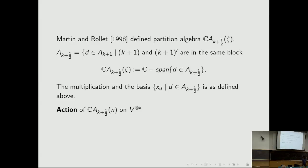Martin and Rollet in 1998 defined the partition algebra CA_{K+1/2}(ζ). Here A_{K+1/2} is the set of all elements in A_{K+1} such that K+1 and (K+1)' are in the same block. Halverson studies this algebra and calls it the Rook partition algebra. CA_{K+1/2} is the C-span of these elements, and multiplication and the X_D basis are defined as before.